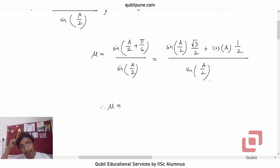Therefore, μ is equal to—now what you can do is you can cancel sin A/2 actually. So it will be √3/2 plus 1/2, cos upon sin is cot. So now we understand from where that cot inverse is coming from.